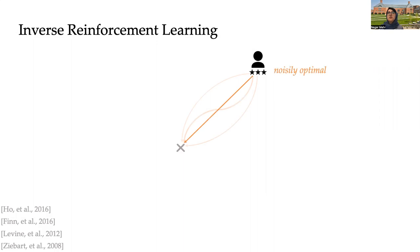And under the assumption that the agent is noisily optimizing a cost function, we try to learn the underlying cost function.